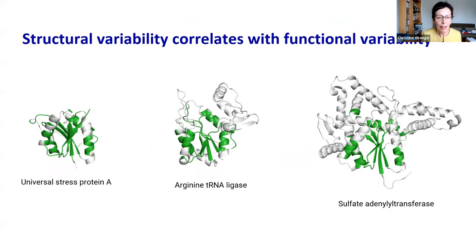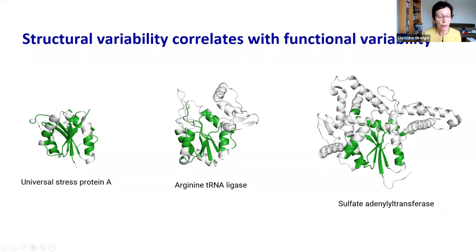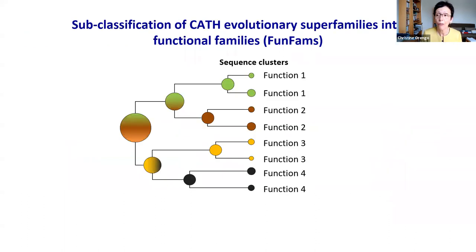Having done this classification, we can see that actually about 1% of the families account for nearly half the data — they're very highly populated, found in multiple species, and often have multiple copies within a genome. But these copies very frequently are diverging in structure and function. You can see for this family, although the structural core in green is conserved, there's considerable divergence outside that structural core, which correlates very often with functional difference. We're really interested in how function evolves.